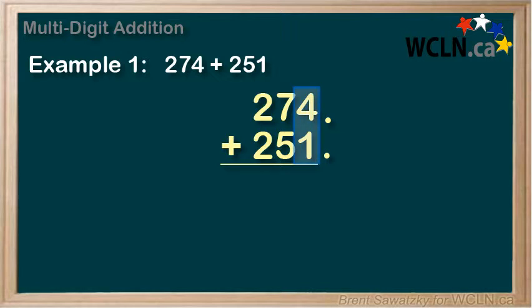Starting in the right hand column, the ones column, four plus one is five. So we mark down the five and we have nothing to carry.